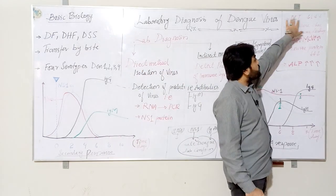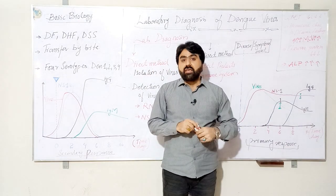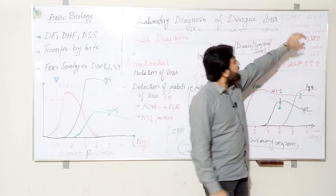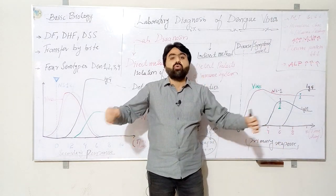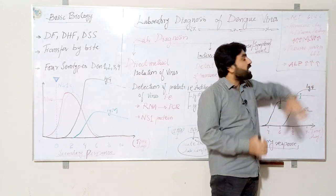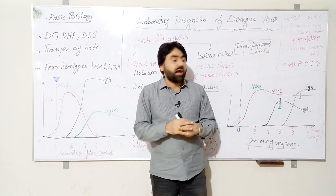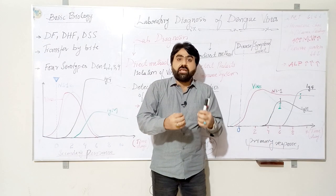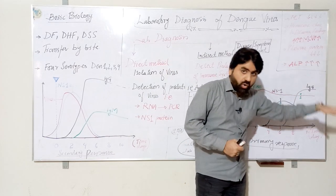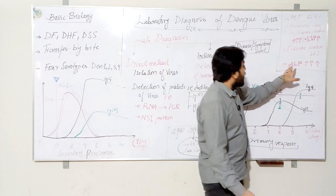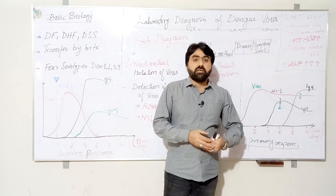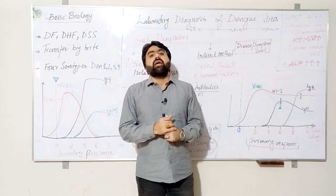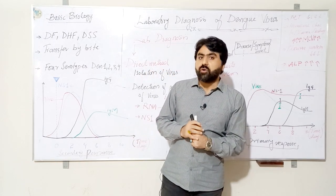Besides specific markers, several supportive tests are performed on suspected dengue patients. Platelets are markedly decreased in dengue infection. Due to plasma leakage, hemoconcentration occurs, resulting in increased hematocrit (HCT) levels. Plasma proteins also leak out, causing hypoalbuminemia. Additionally, alkaline phosphatase (ALP) and other liver enzymes may be elevated. These supportive tests help clinicians confirm the diagnosis of dengue virus infection.